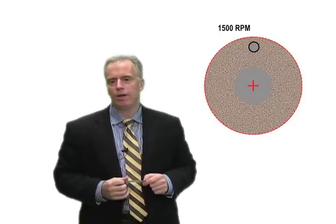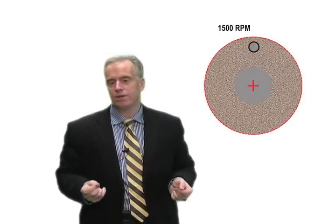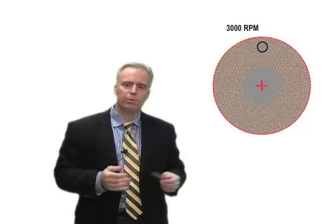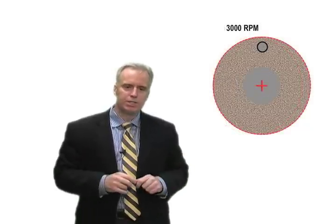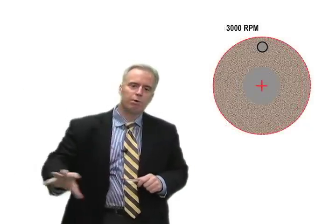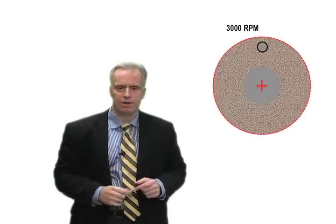If I run that wheel at a higher RPM, let's say 3000 RPM, the wheel pulls more so that eccentricity is going to get bigger and we're going to pull more away from the center line of the spindle.